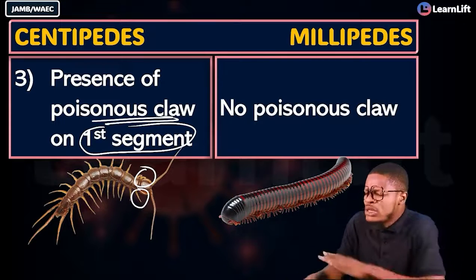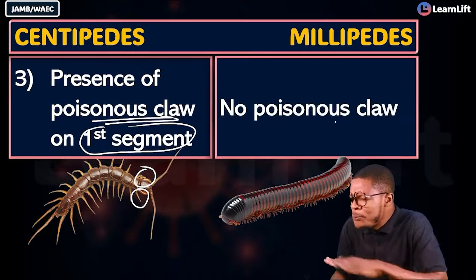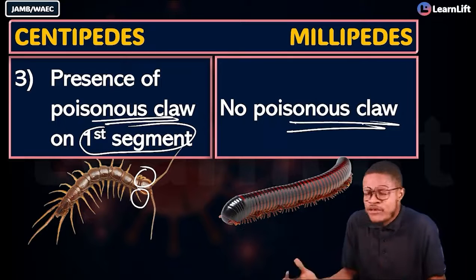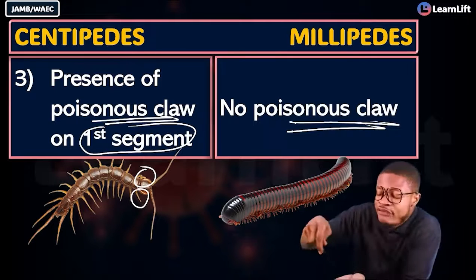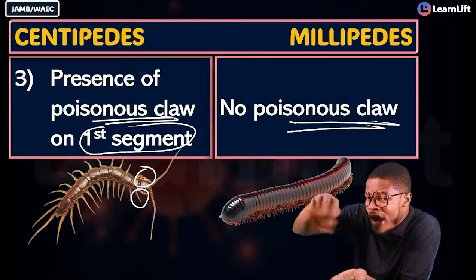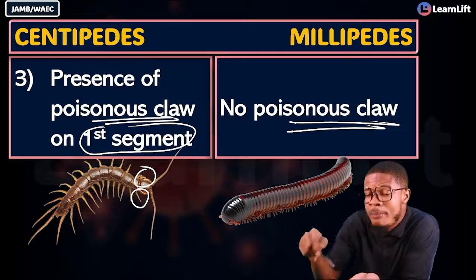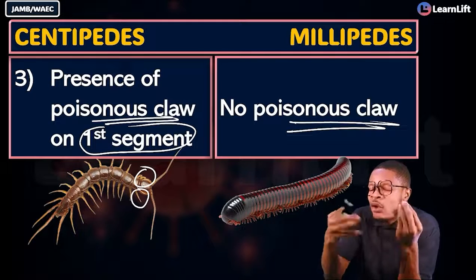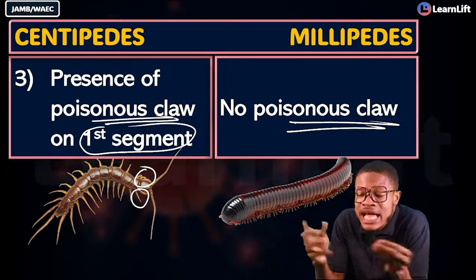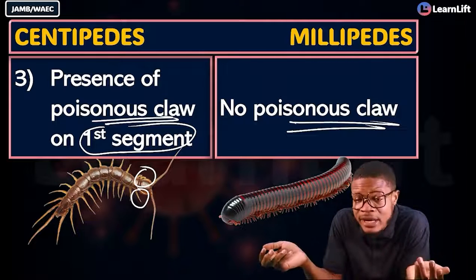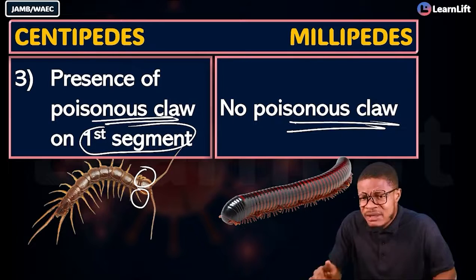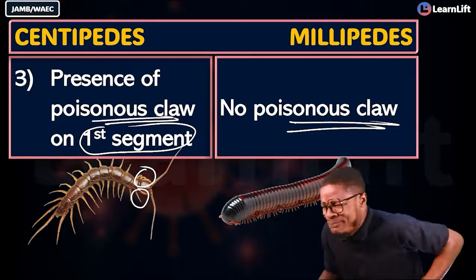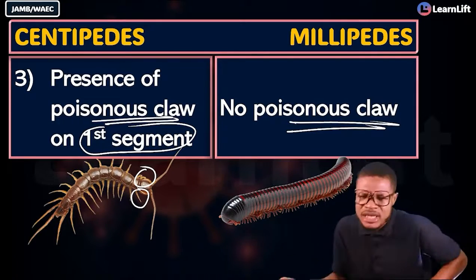Millipedes do not have poisonous claws. Instead, they defend themselves in two ways: first, they coil into a ball when touched; second, they release an offensive odor to repel threats.